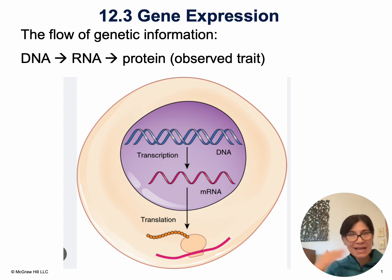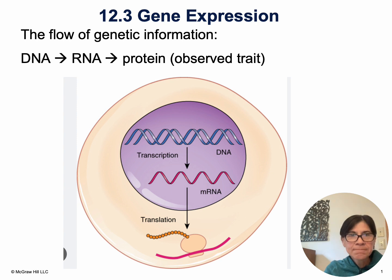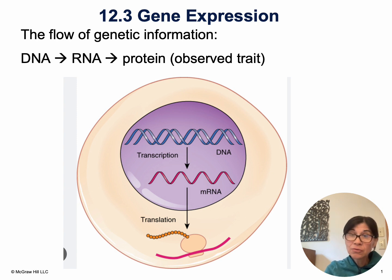DNA has a code, which is the order of those bases — A, T, G, C. If you compare my DNA code to your DNA code, it's different. So DNA has the code, but DNA can't leave the nucleus, and that code determines the proteins that make us up. Proteins are made out in the structure called the ribosome. So somehow our cells need to take this code from the nucleus out to where the protein is made, which is in the ribosome. DNA can't leave the nucleus, so our cells require a messenger.